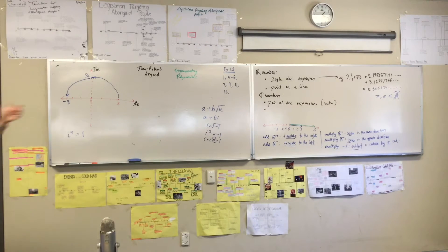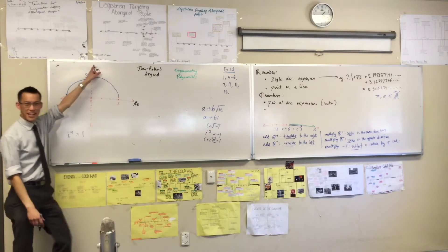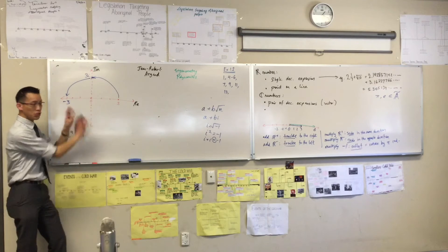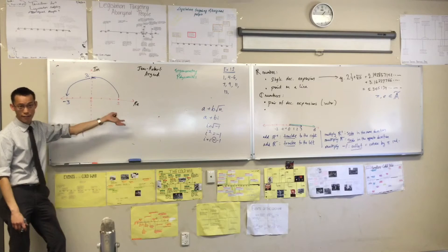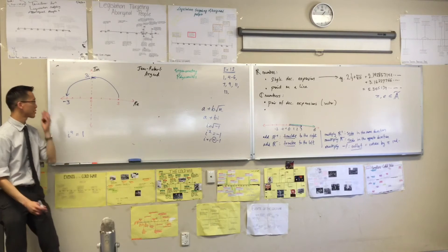Now, we therefore call this, when you see it's real and imaginary, not real and real, not a Cartesian plane, this is what we call an Argand diagram. Minor, minor difference.